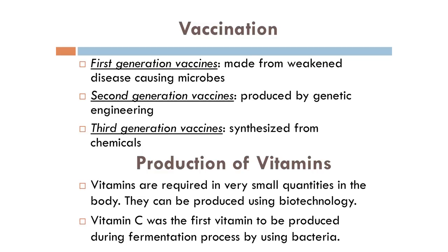Coming to the production of vitamins — vitamins are required in our body in micro quantities and we can prepare these vitamins using microbes. For example, vitamin C was the first vitamin to be produced during a fermentation process by using bacteria.